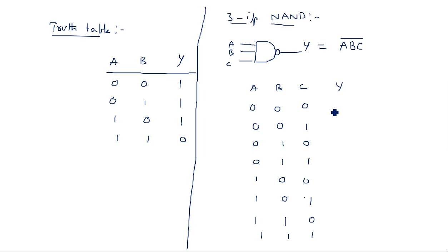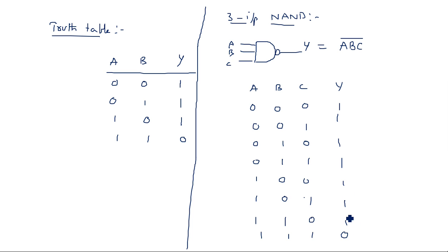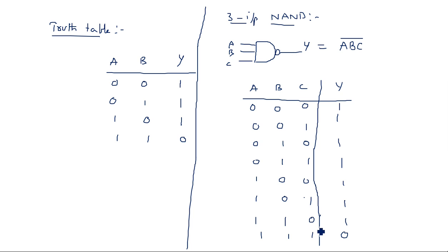Whenever all the inputs are 1s, then only the output is 0 — it is the complement of AND operation. In all remaining cases the output is logic 1. This is the truth table for the 3-input NAND gate.